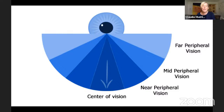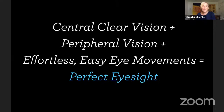Your vision is definitely sharper in the near periphery field than in the middle or outer peripheral field. However, even in the near periphery, you cannot ever see perfectly clear. Only in that tiny foveal central vision can you see clearly — and that was really mind-blowing for me when I first learned vision improvement. That's why seeing things moving is so important. Here's the formula: central clear vision plus peripheral vision plus effortless easy eye movements equals perfect eyesight.